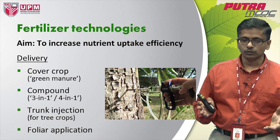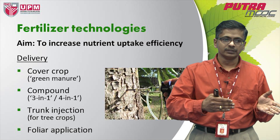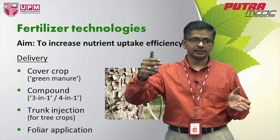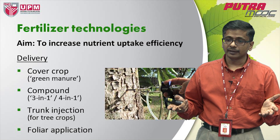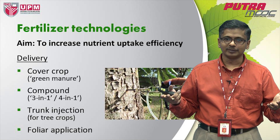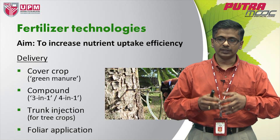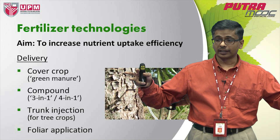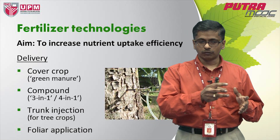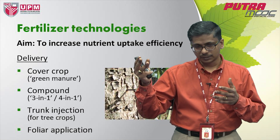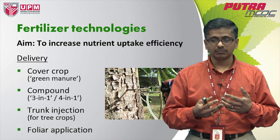We also have foliar application, which is based on that same concept as trunk injection — meaning you're trying to shorten the journey of the nutrient between the source and the sink. In the case of foliar application, leaves are where photosynthesis happens and it's where food is manufactured within the plant, and then food is assimilated down to all other parts of the plant. When you apply the nutrients to the foliage, you have a very efficient absorption of the nutrients, and therefore your uptake efficiency increases.